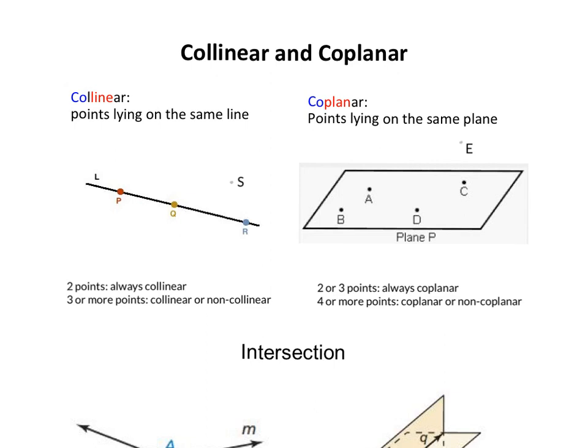The other special case is all the points maybe don't lie on the same line, but they lie on the same plane. Point A, B, C, D all lie on plane P. They are called coplanar points.